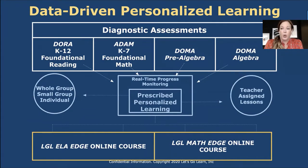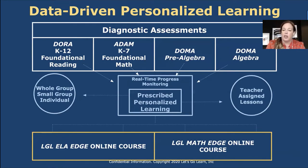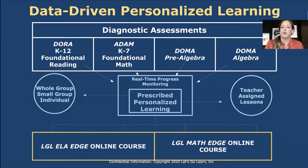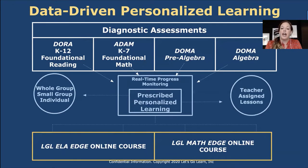Our platform begins with a diagnostic test, and depending on which test you're using, we have Adora, which is a foundational reading test. We have Atom, which is a foundational math test. And then we have access to DOMA pre-algebra and DOMA algebra, which are other diagnostic tools for older math students. As soon as kids are done testing, we prescribe the personalized learning path. We provide many reports that can help you monitor your whole group instruction, small group, or individualized instruction. You also have the ability to enroll your kids on automated paths for ELA Edge and for math as well.